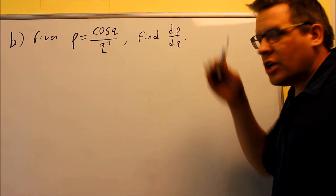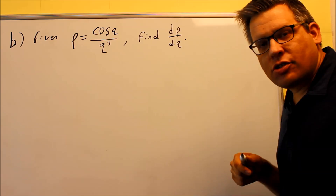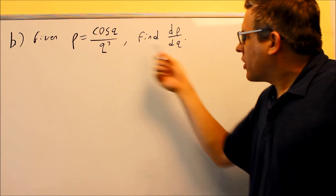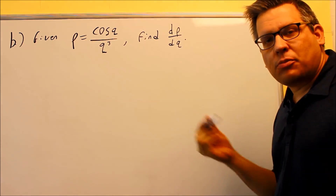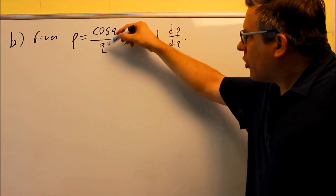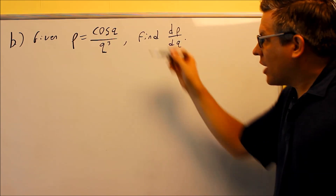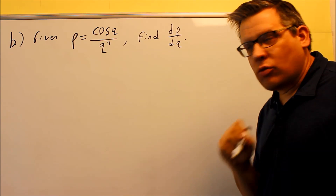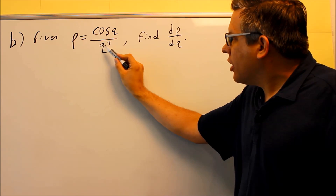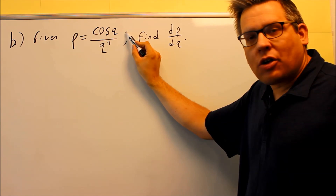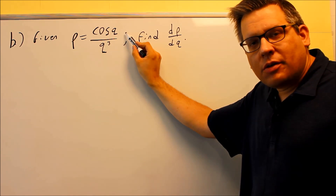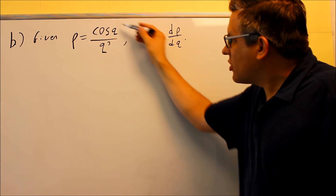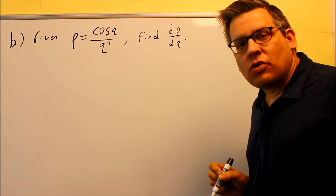For part B, we have some different notation — we don't have the prime notation this time. Instead you're doing dP/dQ, which means the same thing: you're taking the derivative of this with respect to Q, the same as finding P prime. We notice there's a fraction, so we need to use the quotient rule. There is another way using the product rule by moving the power up as Q to negative third, but you'd end up with negative exponents to deal with later. So I'm going to handle it using the quotient rule.